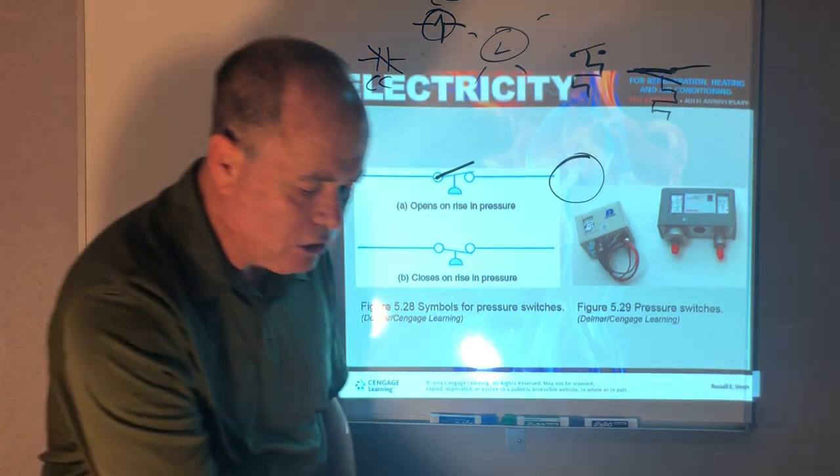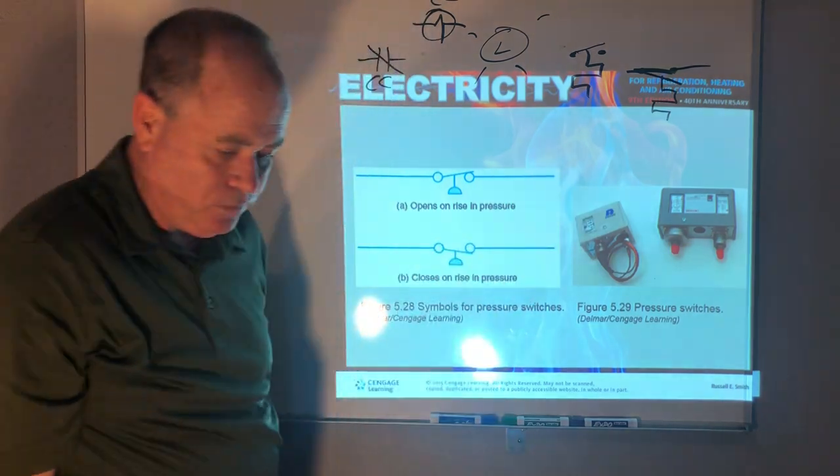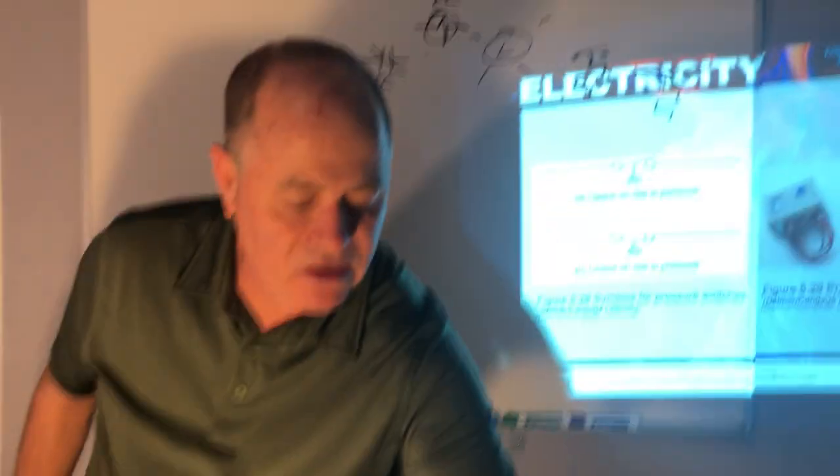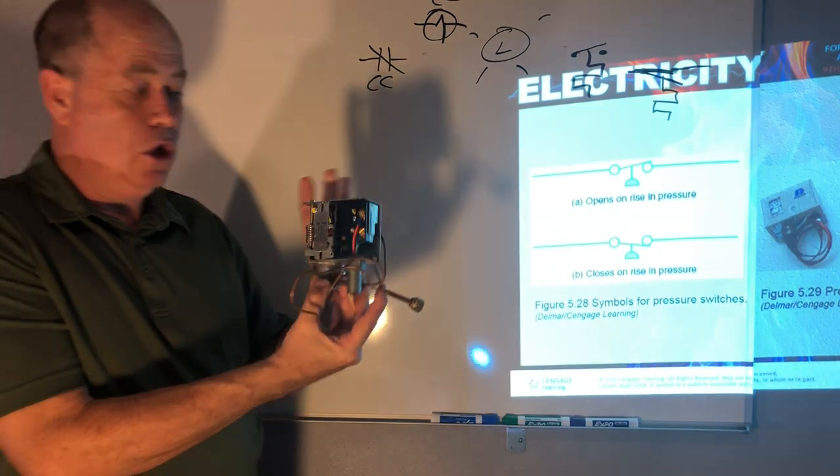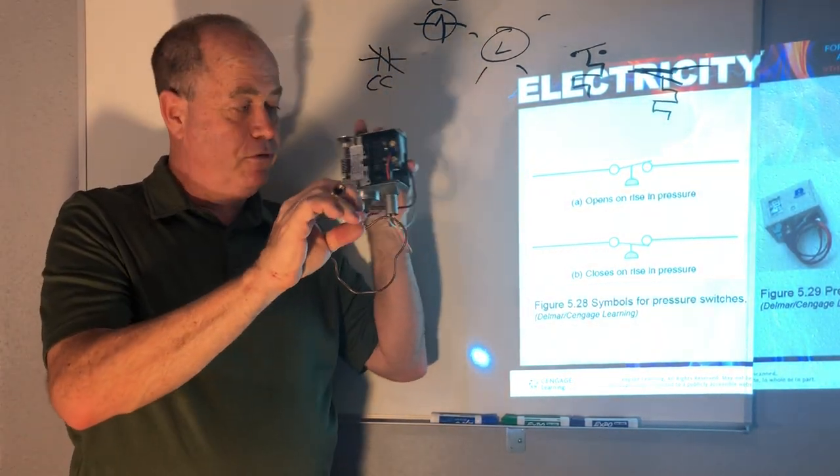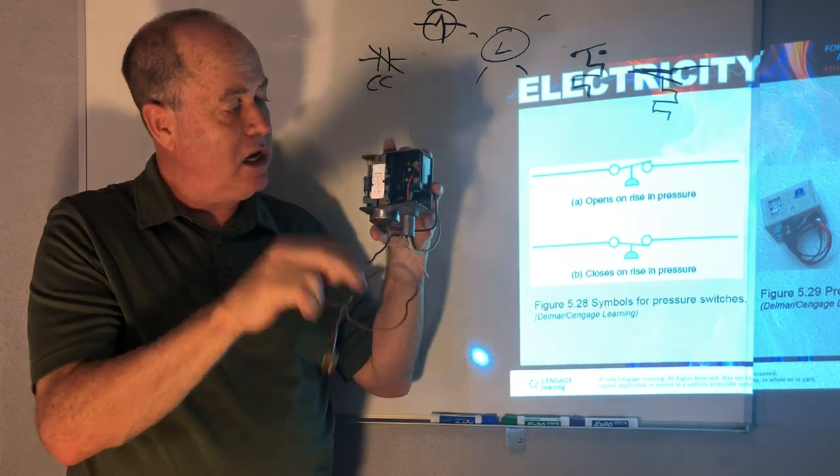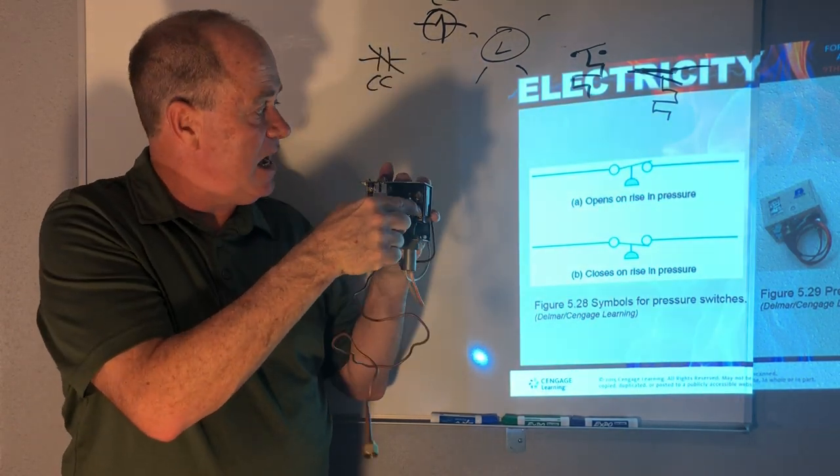Let's actually take a quick look here at a couple of these components. So this is a low pressure control and this would screw into the refrigerant line, like on the low side of the system on the suction line.